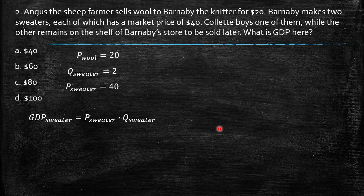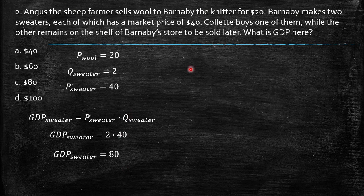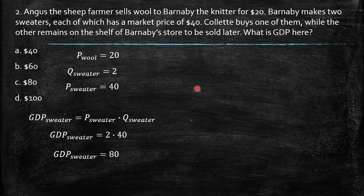The GDP for that economy consists of the price of sweater times quantity of sweaters: two times 40 equals 80. Even though only one sweater was purchased, GDP values all quantities of goods and services at market value. We assume Barnabye effectively holds the unsold sweater at its market value, so GDP for sweaters is 80.